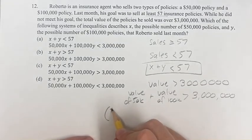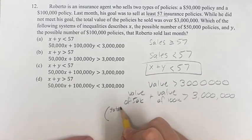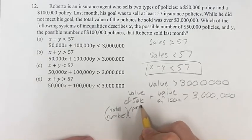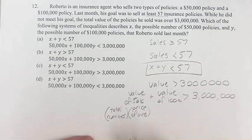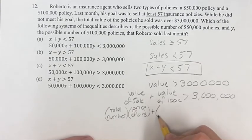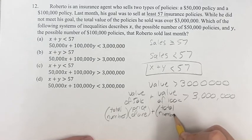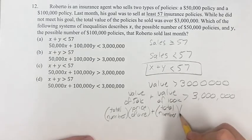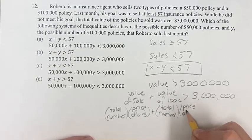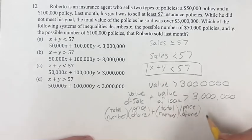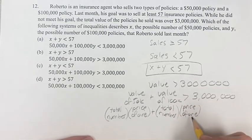To find the total value of each policy type, take the total number of policies and multiply it by the price of one. Same thing with the $100,000 policies — take the number of policies and multiply by the price of one. For example, if you had five policies at $10 each, your total value would be five times 10, or 50.